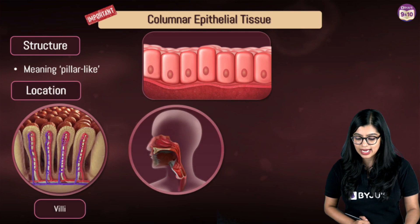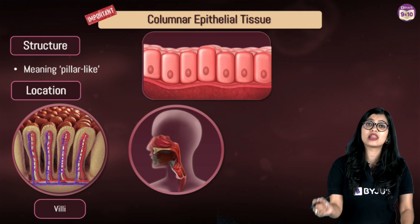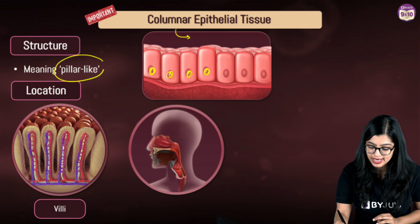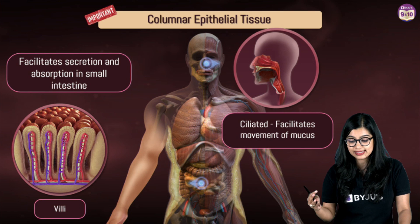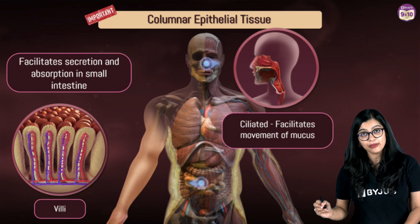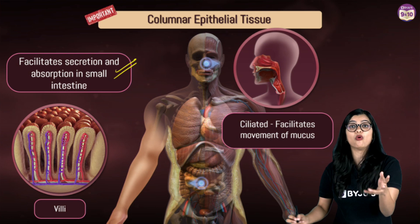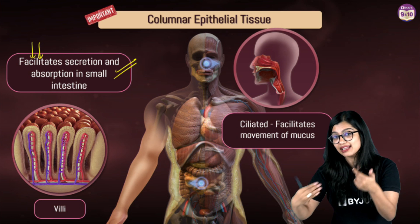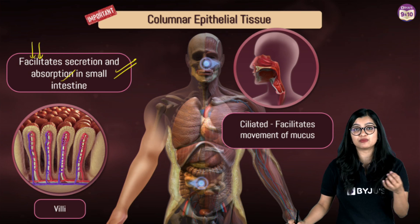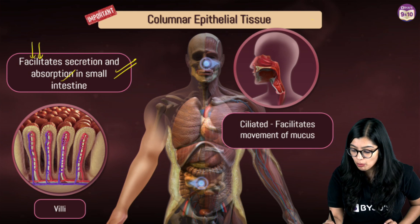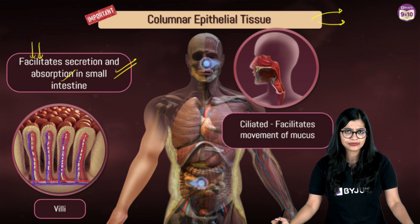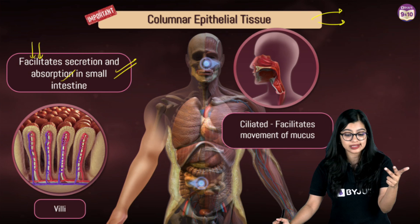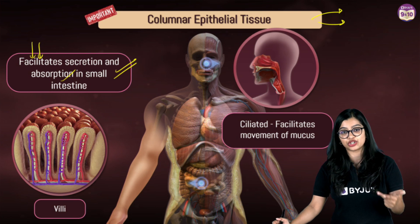The third type is columnar epithelium. These cells are column-like or pillar-like with the nucleus present towards the base. They are normally found in the inner linings of the intestine and in the villi. Apart from protection, they facilitate absorption and secretion in the intestinal region.